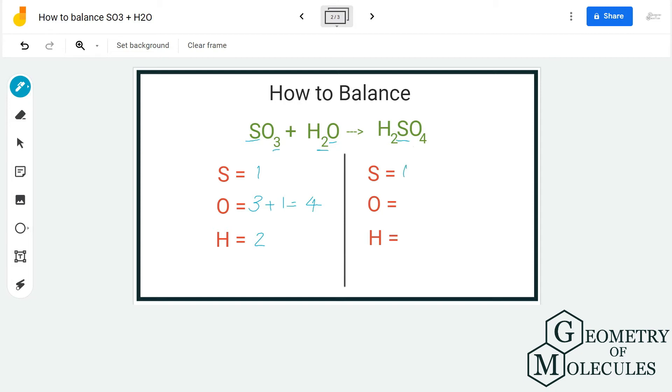On the product side we have one sulfur atom as you can see. Oxygen atoms we have four and hydrogen atoms we have two. So this equation is balanced because the number of atoms on both sides are the same.